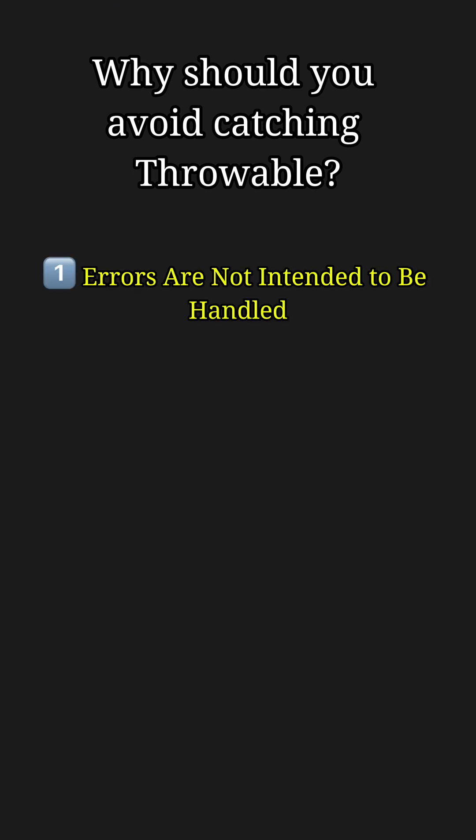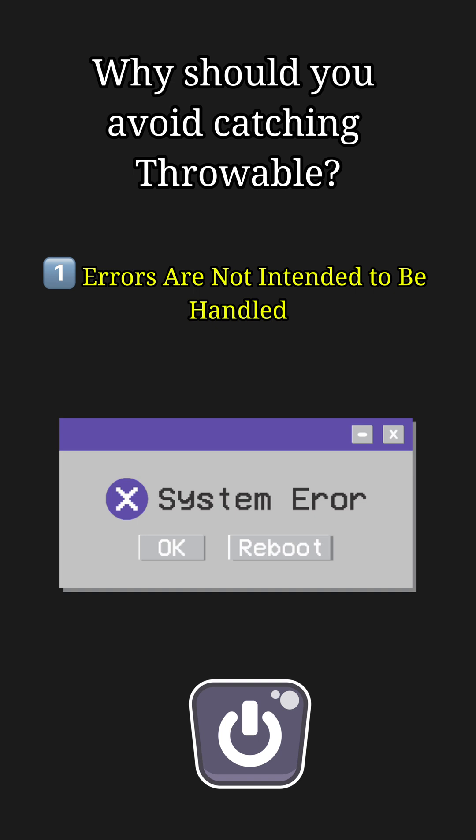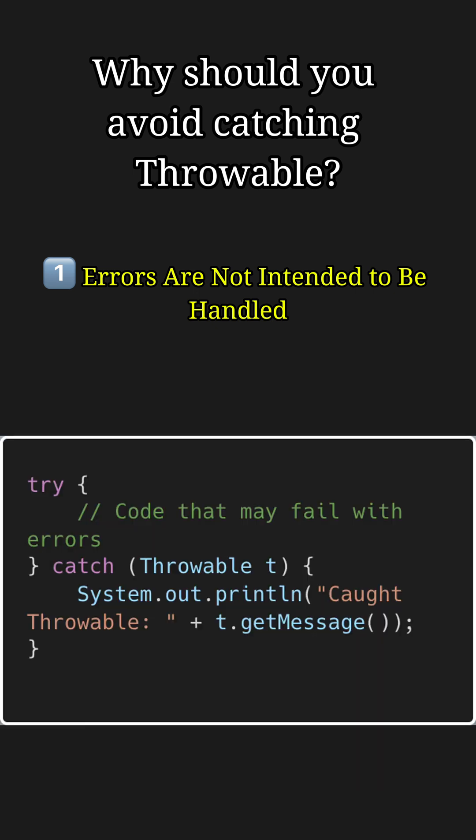The first reason is that errors are not intended to be handled. Errors like OutOfMemoryError or StackOverflowError indicate critical issues that an application cannot and should not try to recover from. These problems often require the application to terminate or restart. For example, here in this code, if an OutOfMemoryError occurs, catching it might not solve the underlying problem and could leave the program in an inconsistent state.